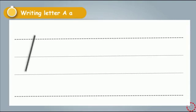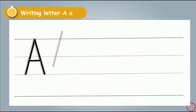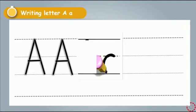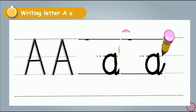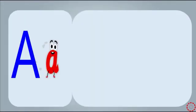Now let's write letter A together. Bring your pencil. Let's write letter A: one line down, another line down, and a crest — this is capital A. Now let's write small a. This is small a.